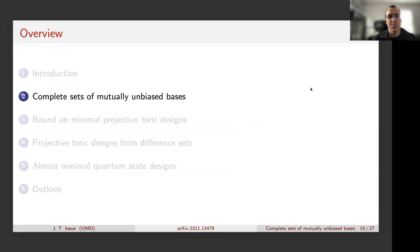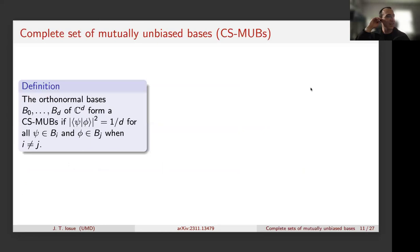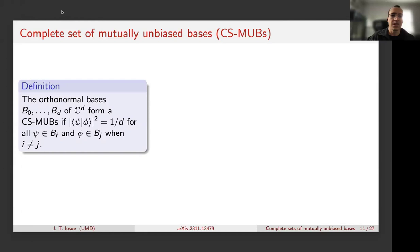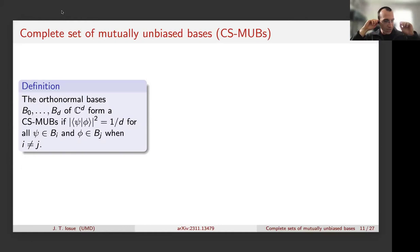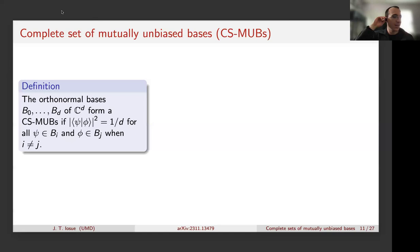Now I'll talk about the connection between projective toric designs and complete sets of mutually unbiased bases (MUBs). A complete set of MUBs consists of d+1 orthonormal bases of C^d such that any two vectors from different bases have overlap exactly 1/√d. This comes up in quantum information through measurement uncertainty: if you can measure a particle's position very well, you can't measure its momentum well. MUBs are a generalization of this to finite dimensional systems.